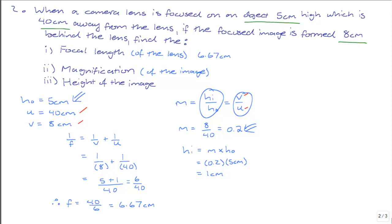So the focal length of the lens is 6.67 centimeters, the magnification of the image is 0.2, and the height of the image is 1 centimeter. Feel free to stay tuned until the next video in the series. Thank you for watching.